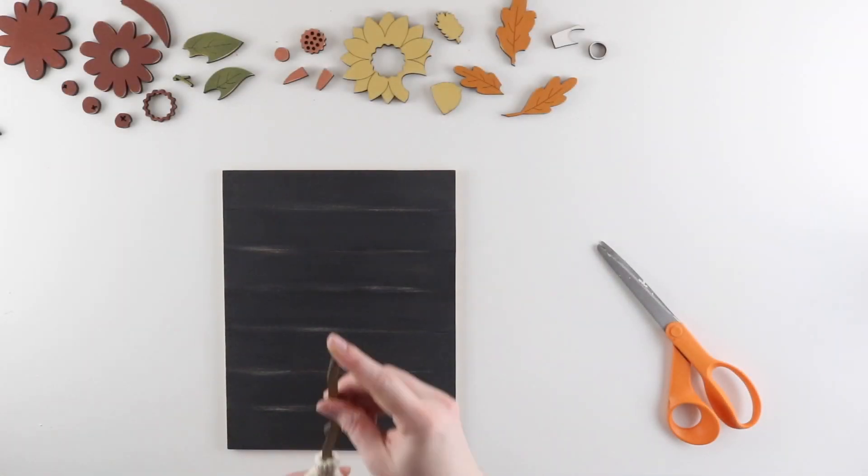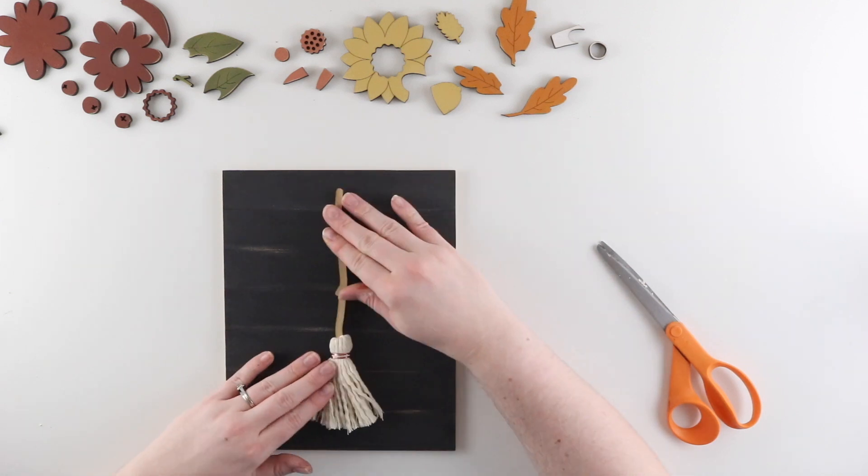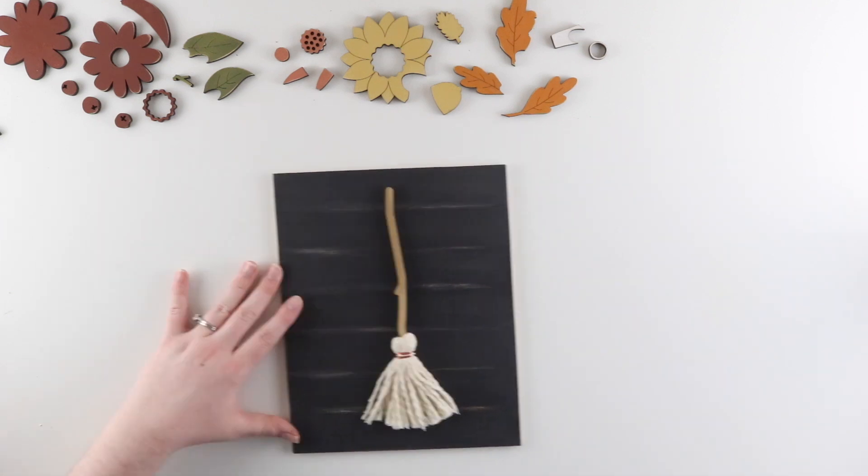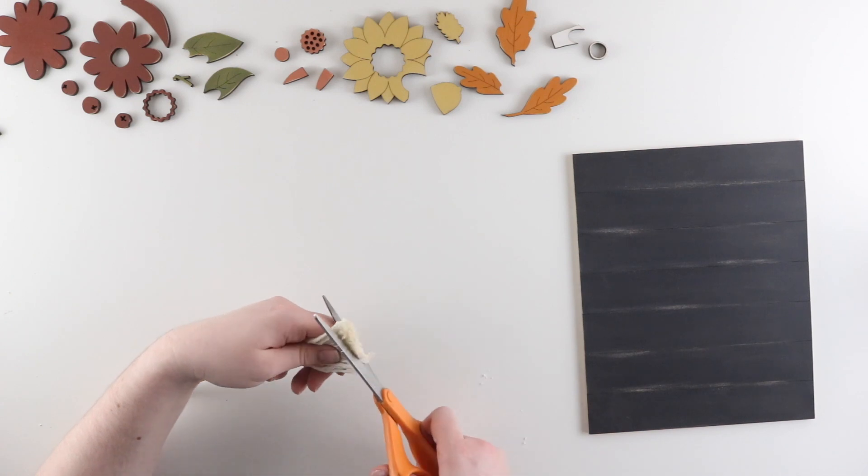To determine the final length of the broom I placed it onto my insert. And I decided that mine was just a little bit too long, so I trimmed off the excess with scissors.